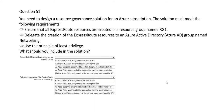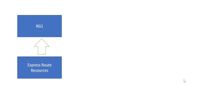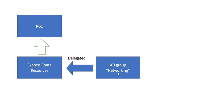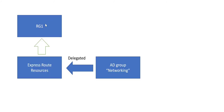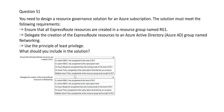Let's move to question 51. Try to pause and understand the story. We have a resource group RG1, and all express route resources should be created in RG1. Only the Active Directory group 'Networking' has the authority to create these resources in RG1. The question asks: which option ensures that express route resources will always be created in RG1?